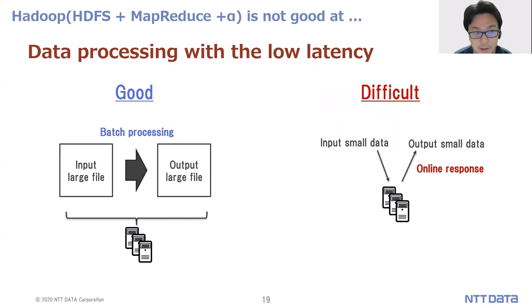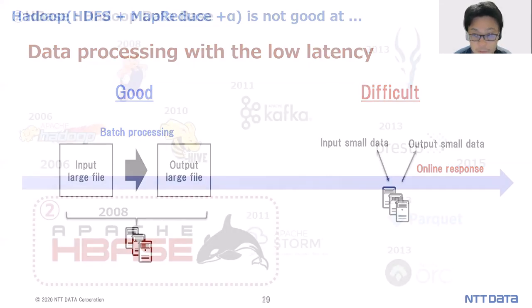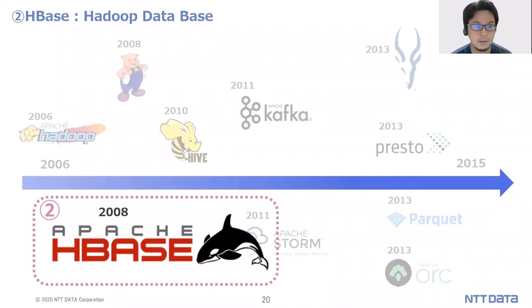Secondly, HDFS is not good at data processing with low latency. Hadoop is good at batch processing using large input and output files. On the other hand, it is difficult for Hadoop to handle small input/output data and respond to requests in an online manner. So, the second topic is HBase.